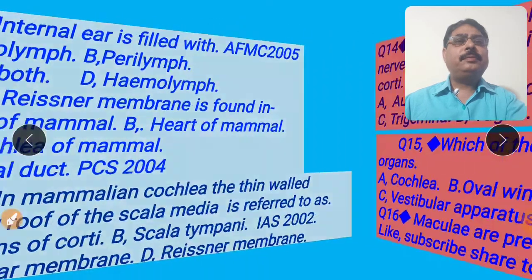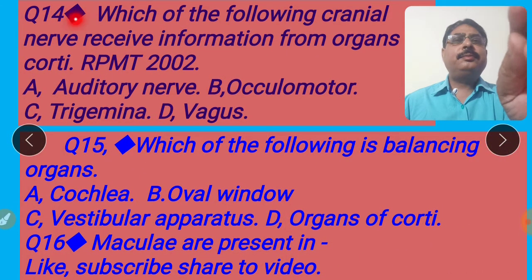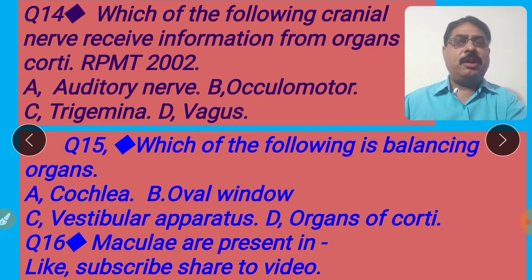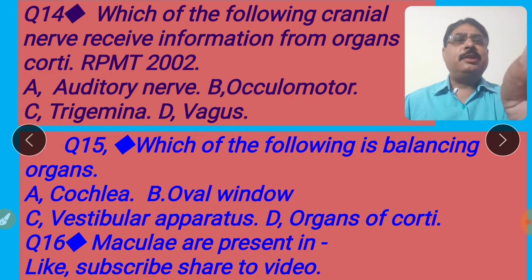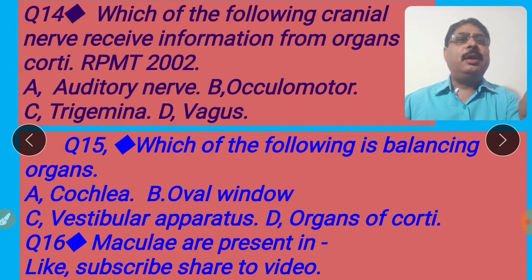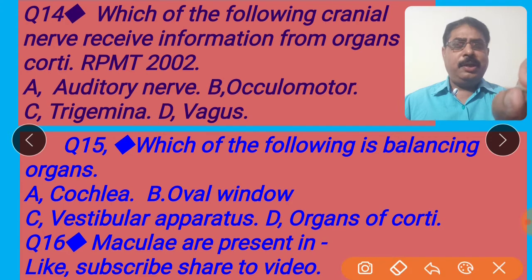Please come to the next slide. Next question: Which of the following cranial nerves receives information from the organ of Corti? This question came in RPMT 2002 — Rajasthan PMT 2002. There are four options: A, auditory nerve — this is the eighth nerve; B, oculomotor — this is the third cranial nerve; C, trigeminal — this is the fifth cranial nerve; D, vagus — it is the tenth cranial nerve. The auditory nerve receives information from the organ of Corti and sends information to the brain. So option A is the right answer. I shall click option A for the right answer.